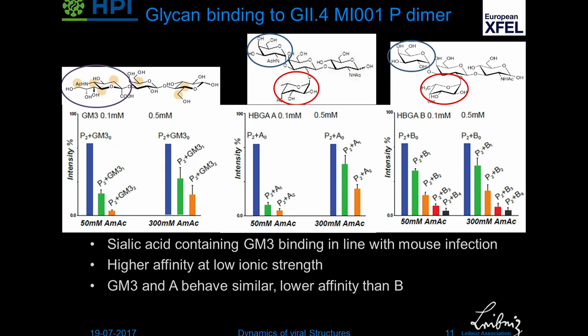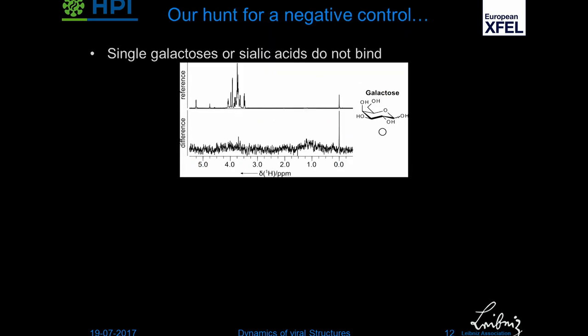To summarize: GM3 and A behave similarly, and B has a much higher affinity and definitely has these additional binding sites. If we just look at individual sugars — which we can't do in mass spectrometry but STD NMR can — we see single galactose: no signals, which means no binding. Single galactose cannot bind, single sialic acid can't bind, but fucose can.